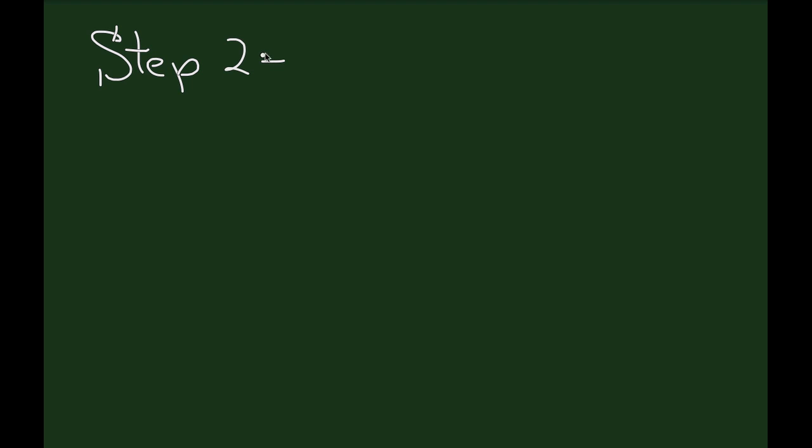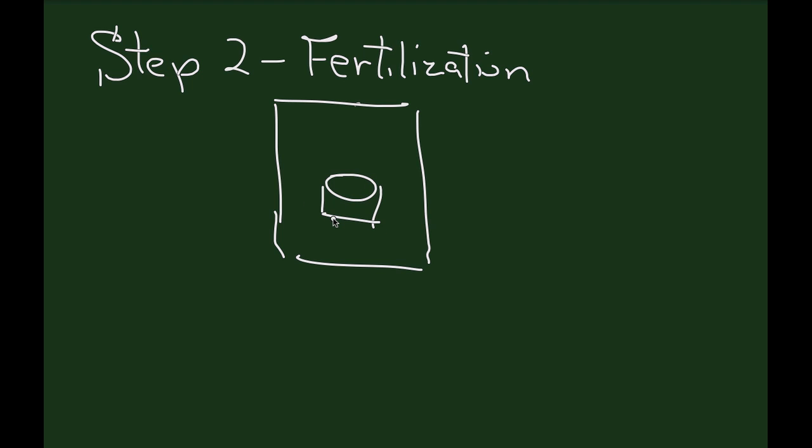Step two in assisted reproductive technology we're going to call fertilization. Remember that in step one, the eggs were aspirated from the reproductive tract, placed in a test tube, and taken into the embryo lab where they were poured out under a microscope. The eggs are found and then placed into an incubator. Inside that incubator are petri dishes, and this is where the actual eggs will reside.